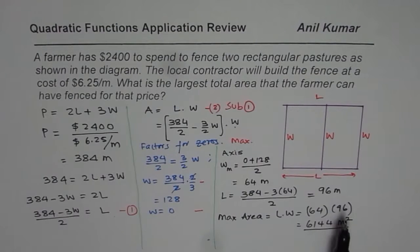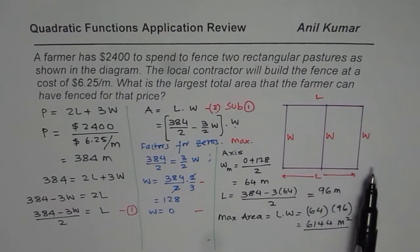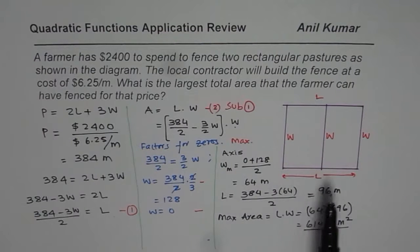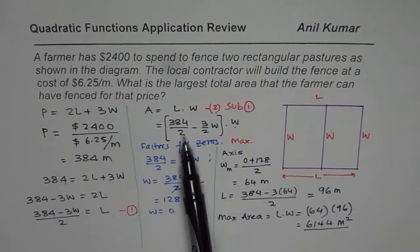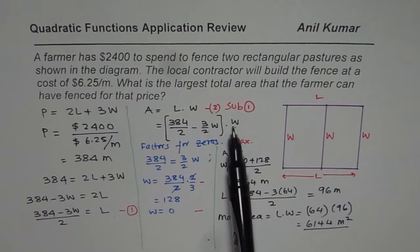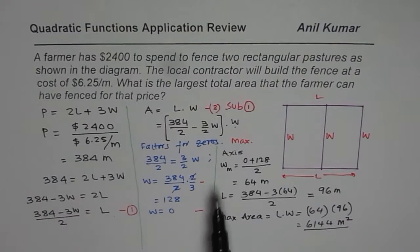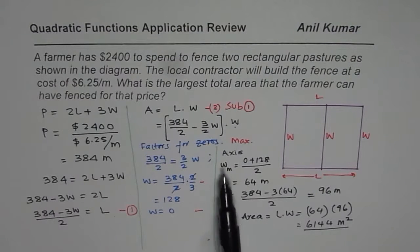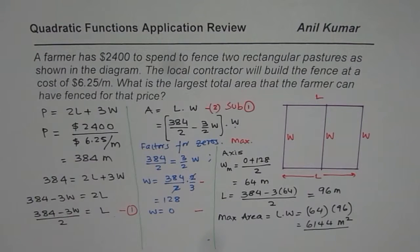So the largest total area the farmer can have fenced is 6144 square meters. In summary: first, use cost and budget to find the maximum perimeter. Then relate length and width using the figure, and express area in one variable. Finally, maximize by finding zeros and taking their midpoint to get the optimal width, then compute the area. I hope that helps — thank you and all the best.